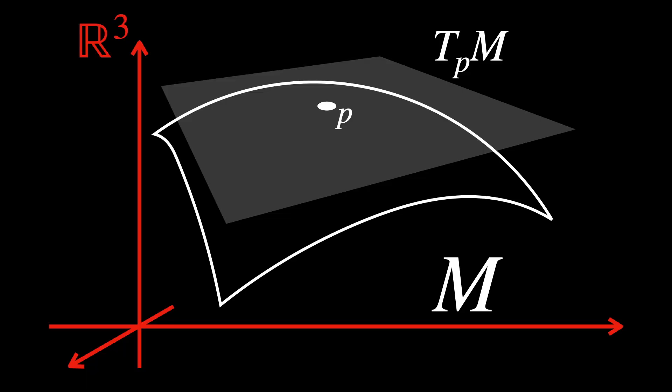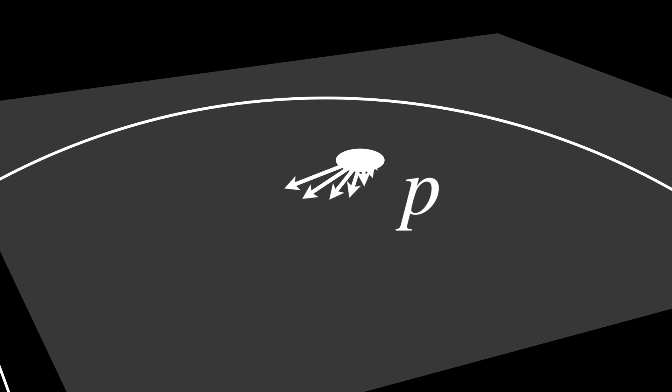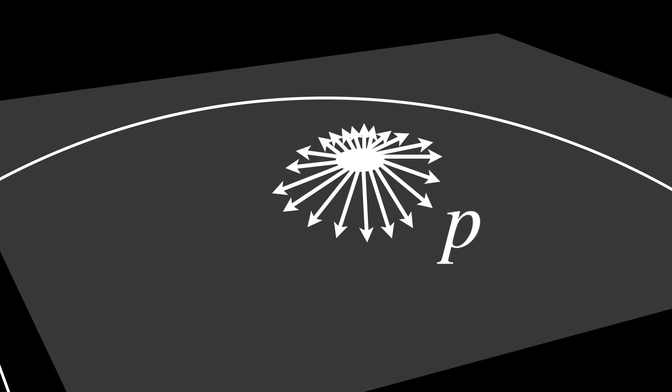Well, actually, these tangent spaces are abstract constructions that represent all possible directions in which one can move from a point on a manifold.